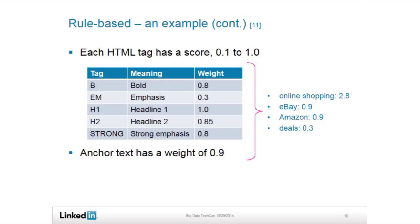Rule-based is very straightforward and easy to implement. The problem is, because you need to find rules by heuristics or intuitions, you can never complete the rule set. You will always find new rules, or existing rules may be contradictory to new patterns. So we have to look at other options as well.